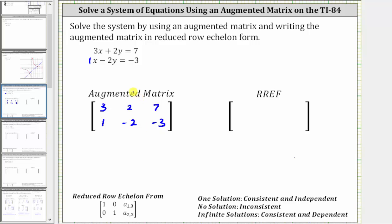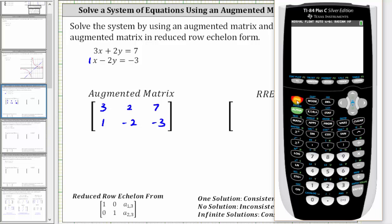Now we enter the matrix into the TI-84. We press second, x to the power of negative one for the matrix menu, right arrow twice to edit, and enter the matrix in matrix A. So we press enter. Here we enter the dimensions. This is a two by three matrix. So we enter two, enter, three, enter, which was already there.